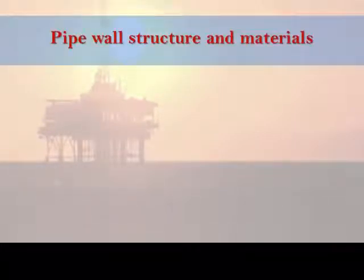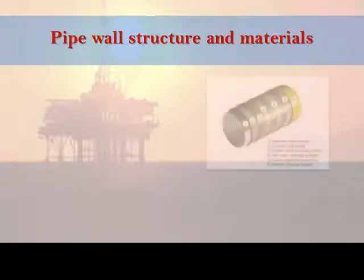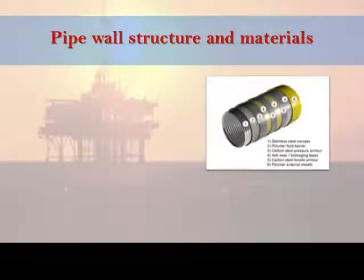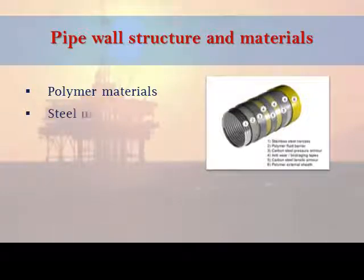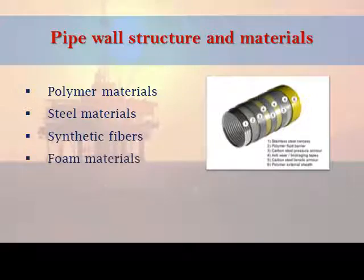Pipe wall structure and materials. The wall of a flexible pipe, including ancillary components, is a composite structure that is composed of a wide spectrum of materials, such as polymer materials, steel materials, synthetic fibers, and foam materials. Each layer has a specific function and is interacting with each other.